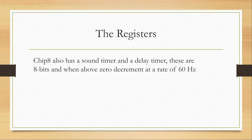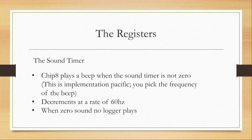The Chip 8 also has a sound timer and a delay timer, both 8-bits wide. When above 0, they decrement at a rate of 60 Hz. Chip 8 plays a beep when the sound timer is not 0, and this is implementation-specific — you pick the frequency of the beep. It can be any type of sound you like, but the sound should be consistent. The sound timer decrements at 60 Hz, and when it reaches 0, the sound no longer plays.